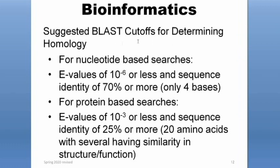These are suggested BLAST cutoffs for determining homology. For nucleotide BLASTs, we generally use an E-value cutoff of 10 to the negative 6 or less, and an identity of 70% or more. For protein-based searches or protein BLASTs, we look for an E-value of 10 to the negative 3 or less, and an identity of 25% or more. For E-values, the lower the better — it's like a P-value, so the lower it is, the more confident we are. Identity is simply how similar your protein is to the protein you're blasting against.